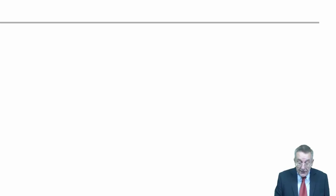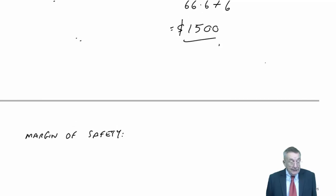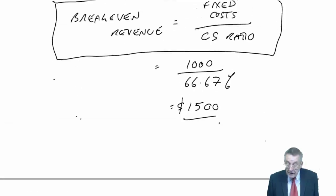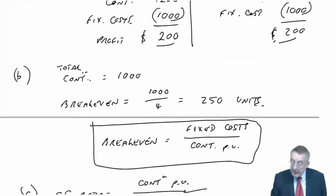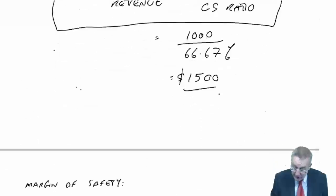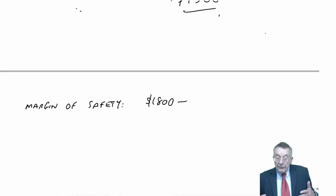Our margin of safety is just measuring how much can we afford to be wrong. It's a bit like sensitivity. It's the difference between the budgeted sales and the break-even sales. If you're doing it in dollars, the budgeted revenue was $1,800. If things go wrong and we sell less, we'll still be profitable provided it doesn't drop below break-even at $1,500.